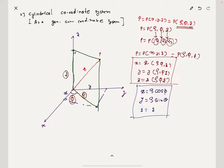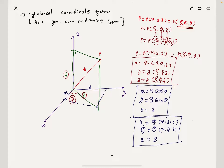Your homework: find Rho as a function of X, Y, Z; find Phi as a function of X, Y, Z; and Z is just Z. This is your homework.